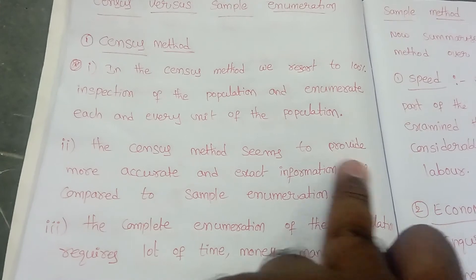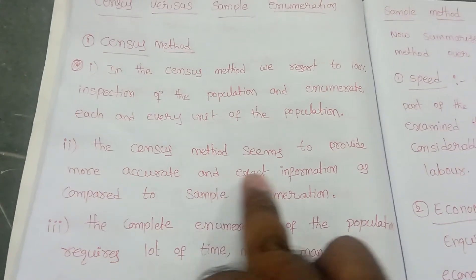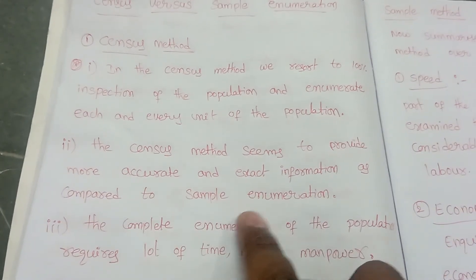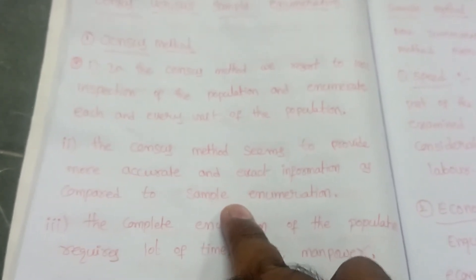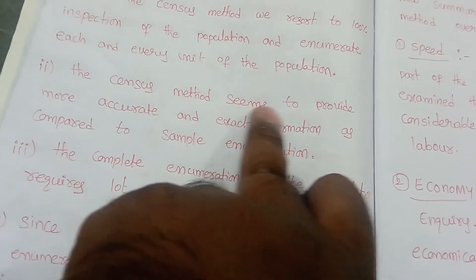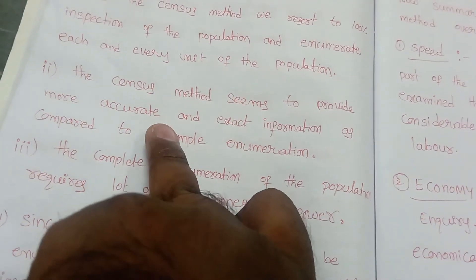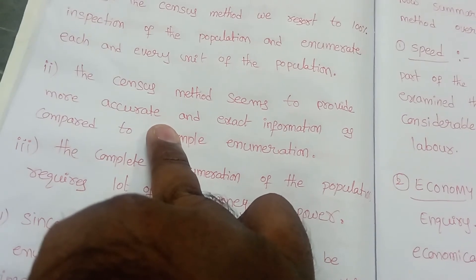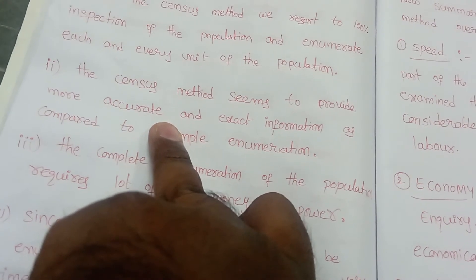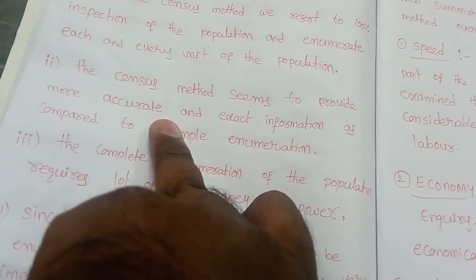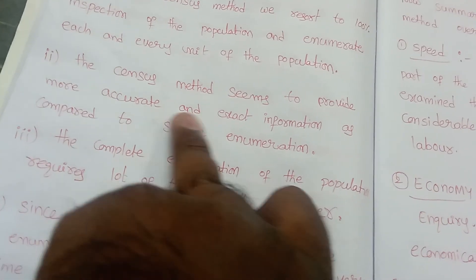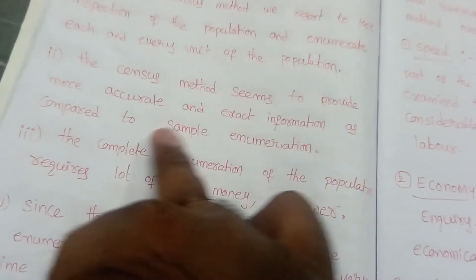The census method seems to provide more accurate and exact information as compared to sample enumeration. In sample enumeration we take only some observations, but in the census method we take 100 percent of the population. So whatever average value we calculate using the census method is accurate and exact information compared to sample enumeration.